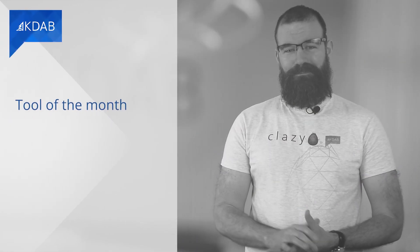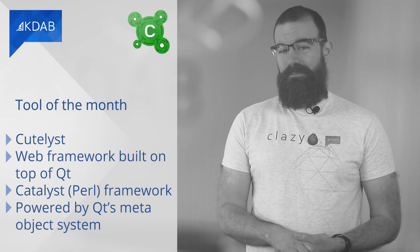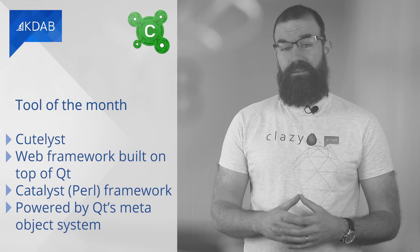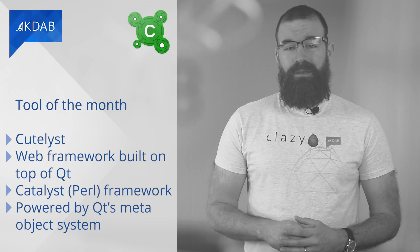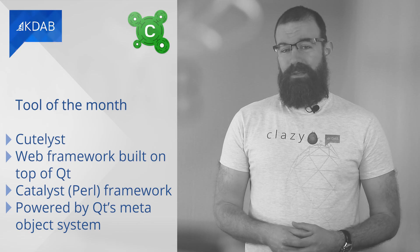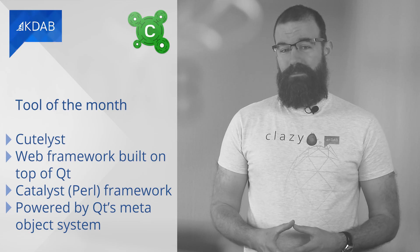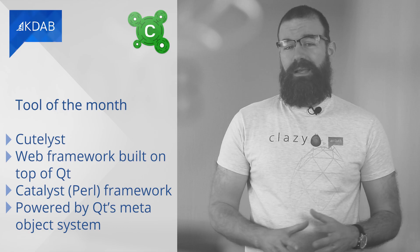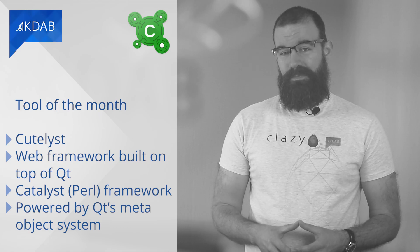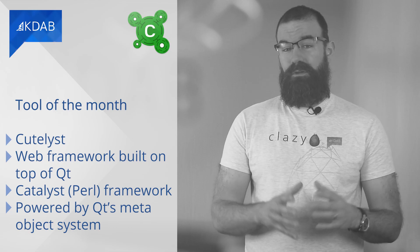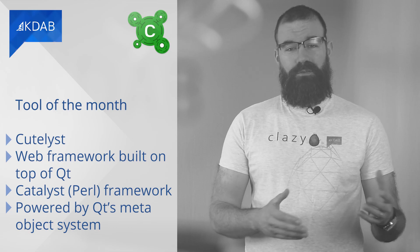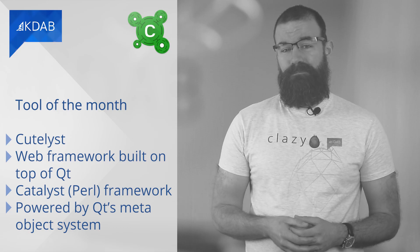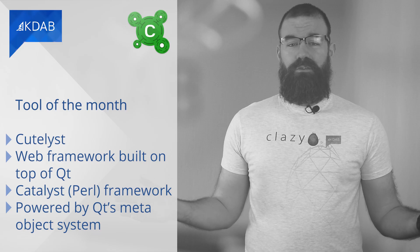It's time for Tool of the Month. QtList is a web framework built on top of Qt, using the simple and elegant approach of the Catalyst Perl framework. Qt's meta-object system powers the core of QtList — it allows for introspecting controller method signatures and generates matching actions that can be invoked later. It helps C++ and Qt programmers develop backend applications, possibly with HTML rendering with Grantlee or Cutelyst templates, without the need for additional development resources.